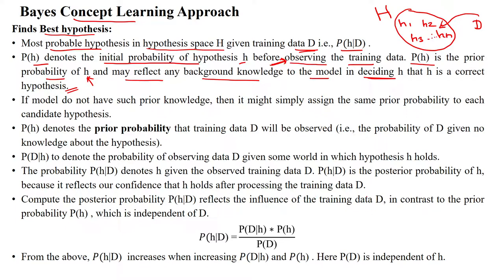The prior probability P(H) is given in the dataset. For example, here we will have the dataset, and the H value will be the target values — the target function labels. From these labels, we can calculate the probability of H, which is the prior probability.